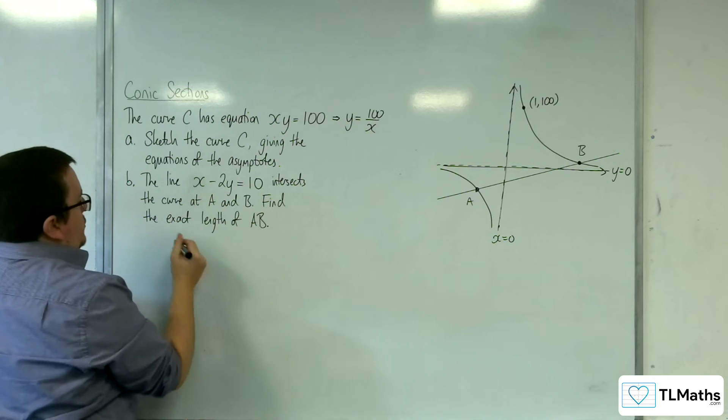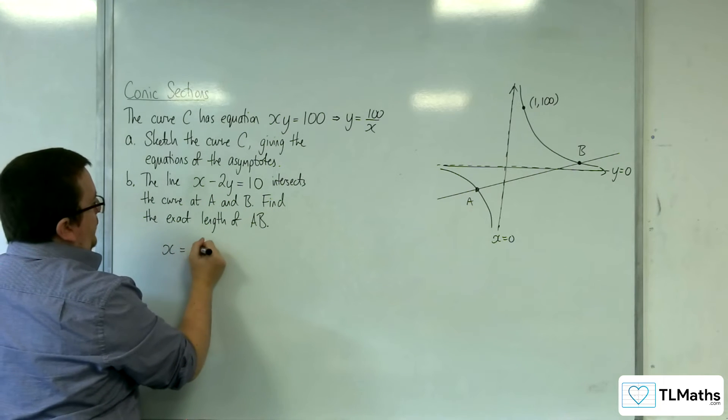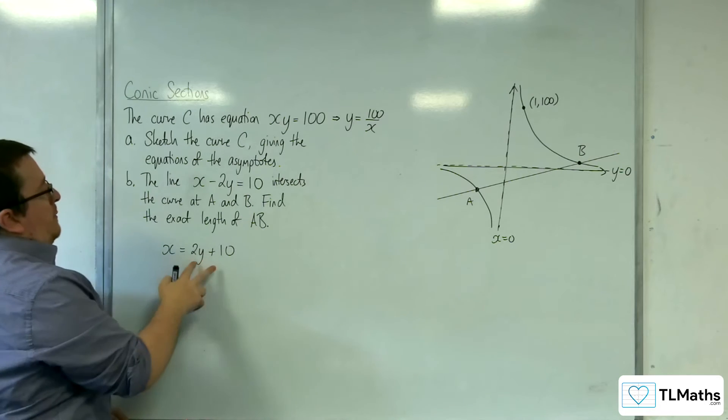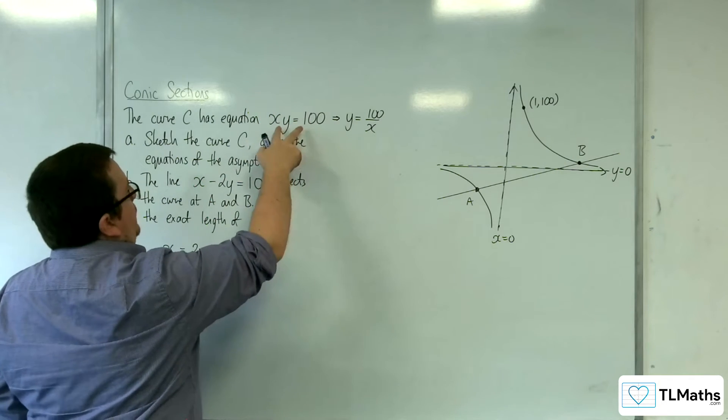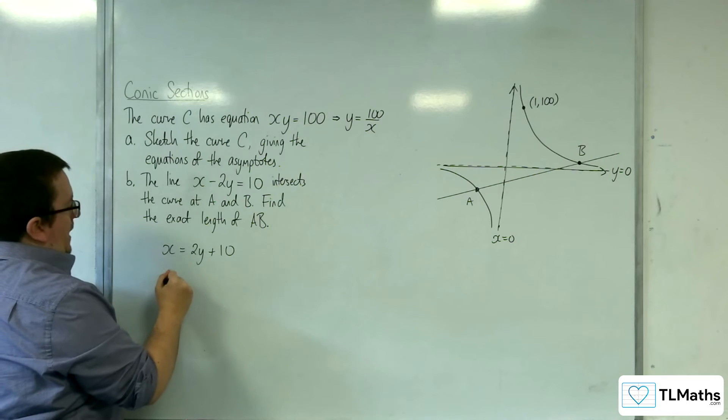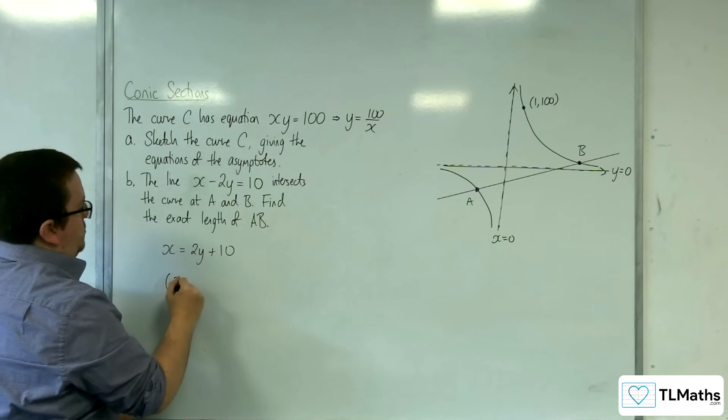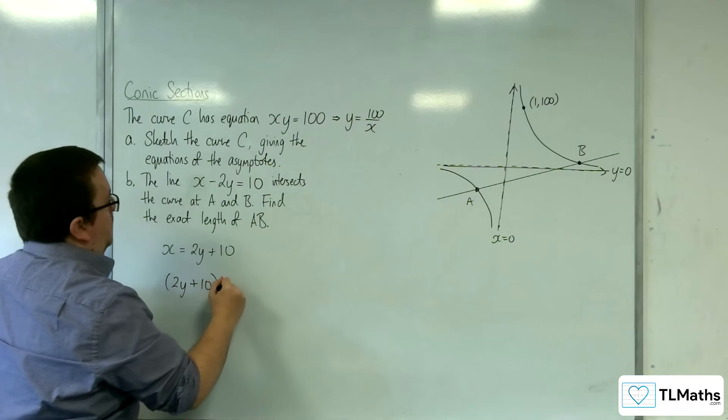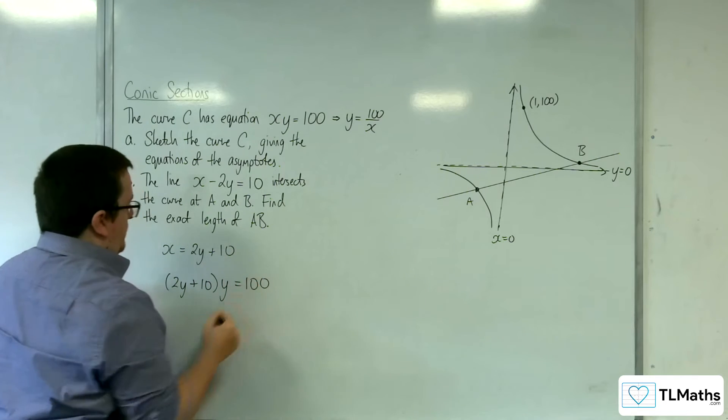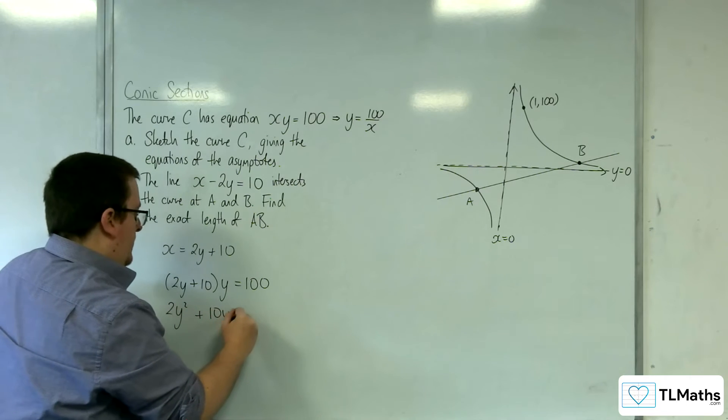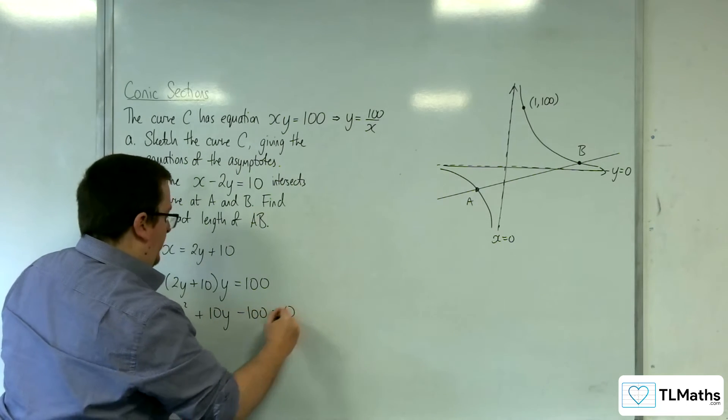Let's rearrange that to get x is equal to 2y plus 10, adding 2y to both sides. And I'm going to substitute that into this equation here. So x has been replaced with 2y plus 10, times by y is equal to 100. So 2y squared plus 10y, take away 100, is equal to 0.